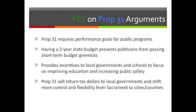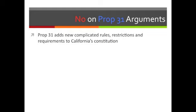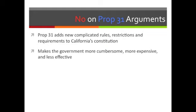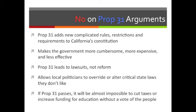The opponents of Prop 31 counter that it doesn't balance the budget, improve performance, or increase public input as claimed. Instead, it adds new complicated rules, restrictions, and requirements to California's constitution, making government more cumbersome, expensive, and less effective — costing tens of millions of dollars per year. It's so confusing and ambiguous that it will take years of lawsuits to sort out what it means. It also allows local politicians to override critical state laws, undermining protections for air quality, public health, or worker safety.